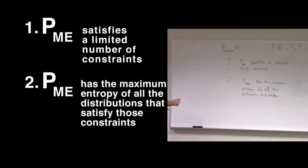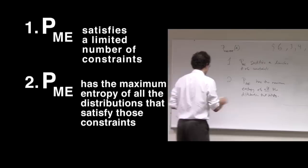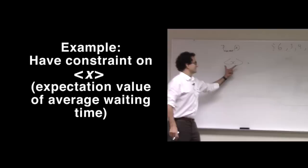So the constraints will always be in the form of expectation values. There will always be constraints on the average of some quantity you measure on the data. So for example, we can have a constraint on the expectation value of the average waiting time. We write this like this, these angle brackets mean the expectation value of X.